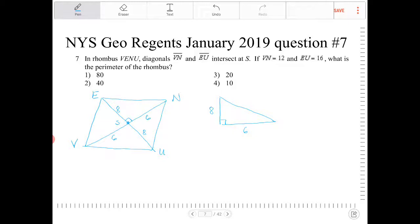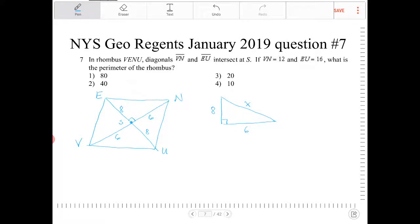This is also a very special right triangle. This is a 3, 4, 5 triangle. But if you didn't recognize that, we can also solve for the hypotenuse using Pythagorean theorem.